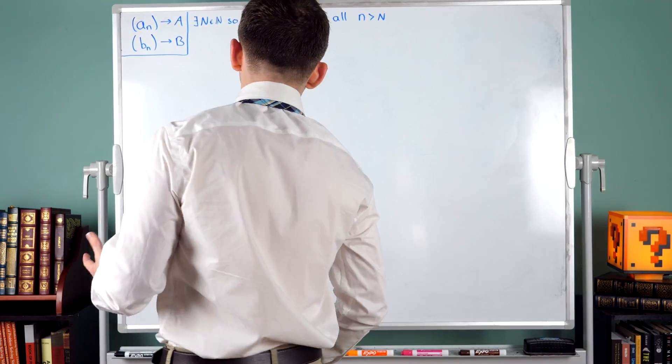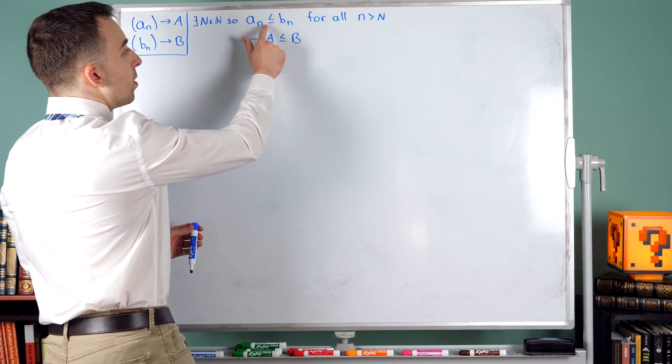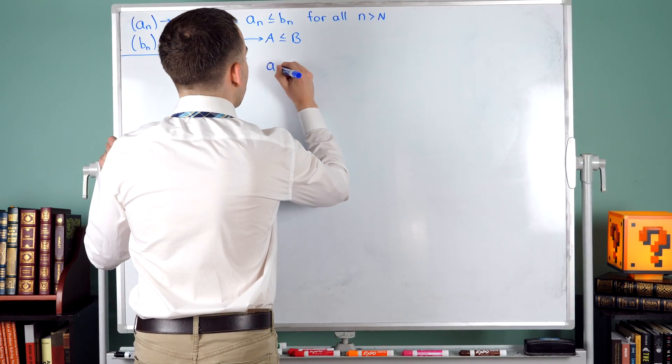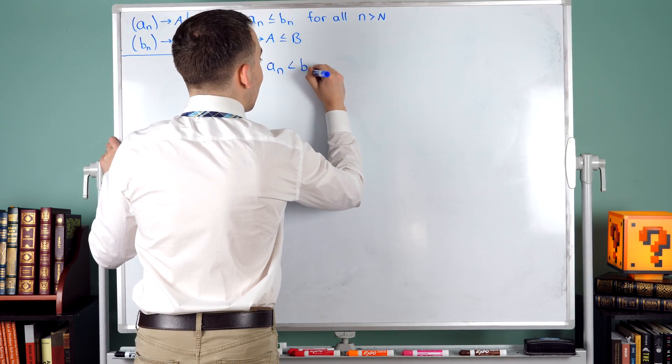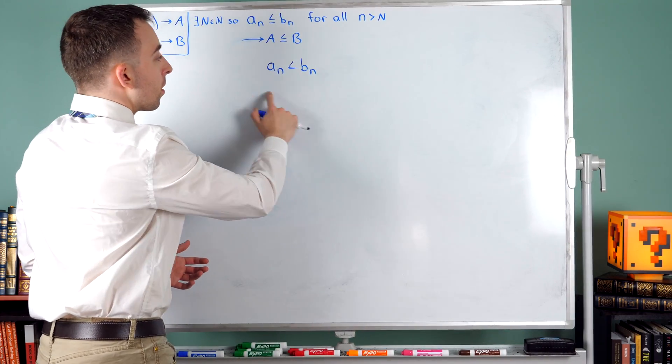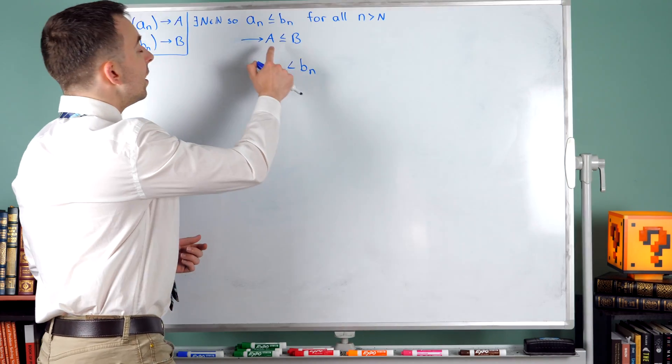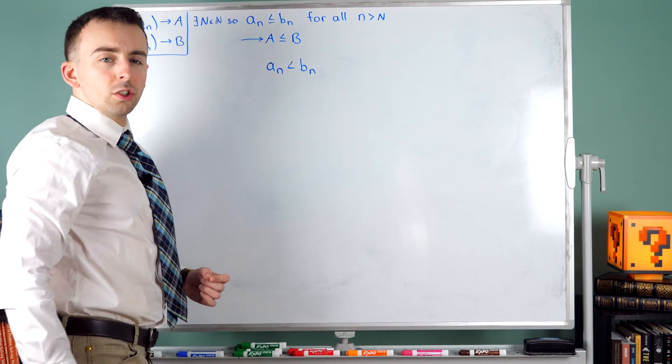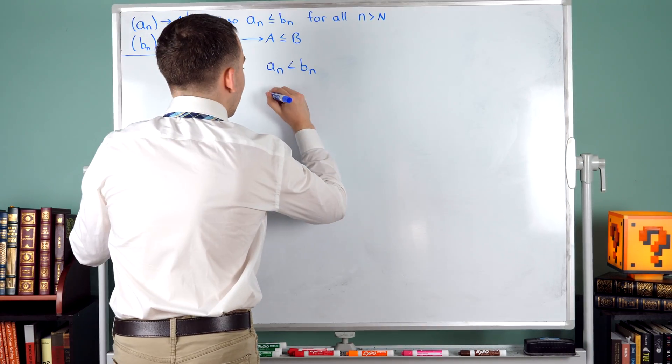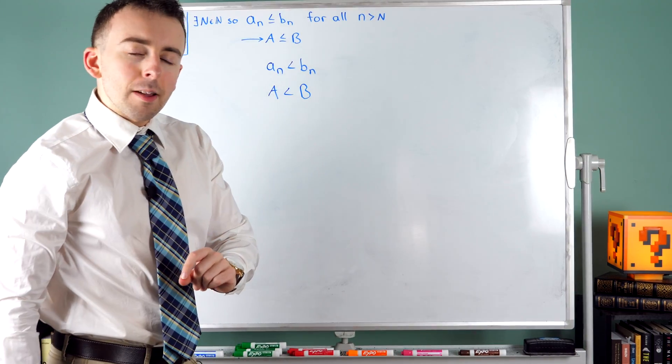Now, the question I want to talk about in today's lesson is what happens if we get rid of this or equal to in the inequality. So what if we know that every term of An is in fact less than every term of Bn? Well, of course, this is a stronger condition than this. So in this situation, we could still conclude that A is less than or equal to B. But could we conclude that the limits relate in this way as well? That A is less than B? I'll let you think about that for a minute.